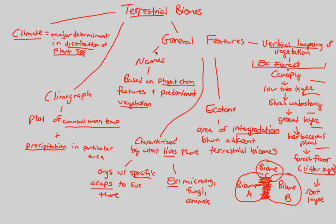So this is the idea of terrestrial biomes. A big idea here is vegetation — it's key in terrestrial biome study. That's where everything starts and what everything is based off of, as stated in our climate definition with the plant species.